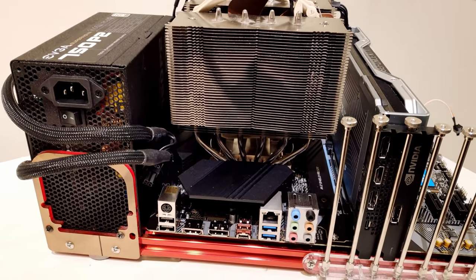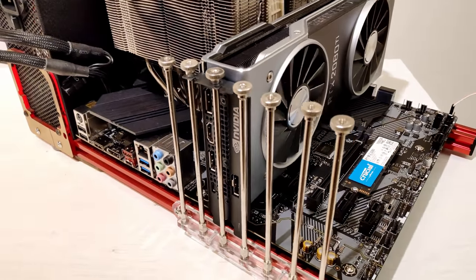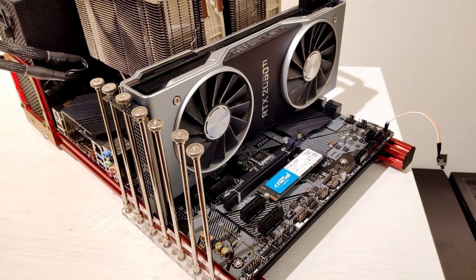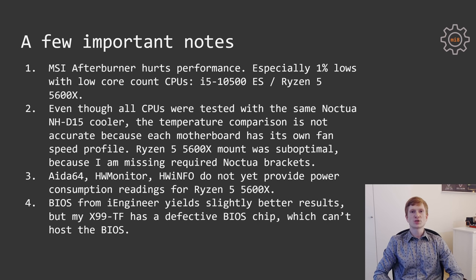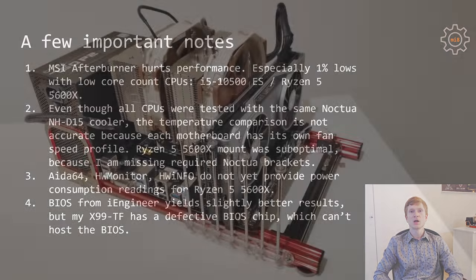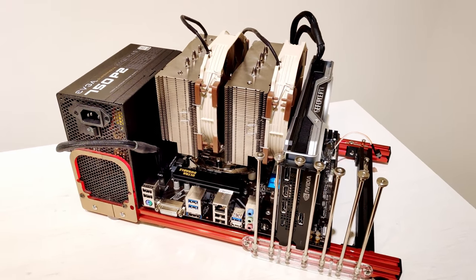A few important notes before the results. MSI Afterburner and HWiNFO impact gaming results significantly — especially with low core count CPUs like the Ryzen 5 and Core i5, causing extra stutters and 1% low drops. Removing these apps improves gaming performance, especially 1% lows, particularly in Call of Duty Modern Warfare and Battlefield 5. I also can't fairly compare temperatures between CPUs, as each motherboard has its own fan profile and fans spin at different speeds.